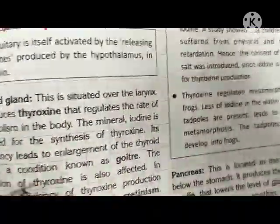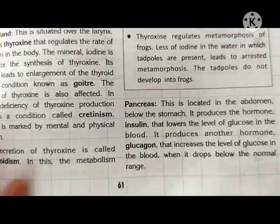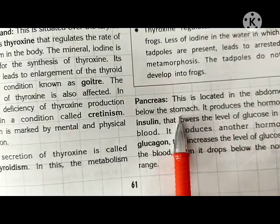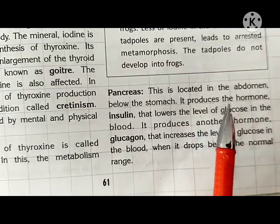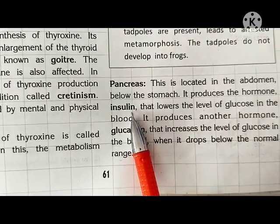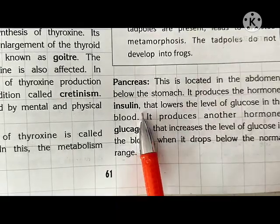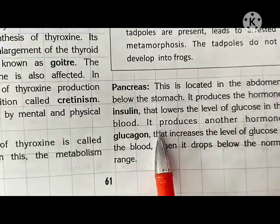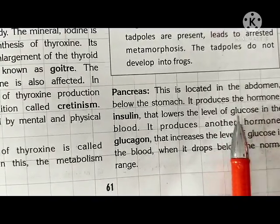The next endocrine gland is the pancreas. First was pituitary, second was thyroid, and third is pancreas. It is located in the abdomen below the stomach. The pancreas produces the hormone insulin. Insulin is responsible for maintaining the blood glucose level — glucose meaning sugar inside our body.